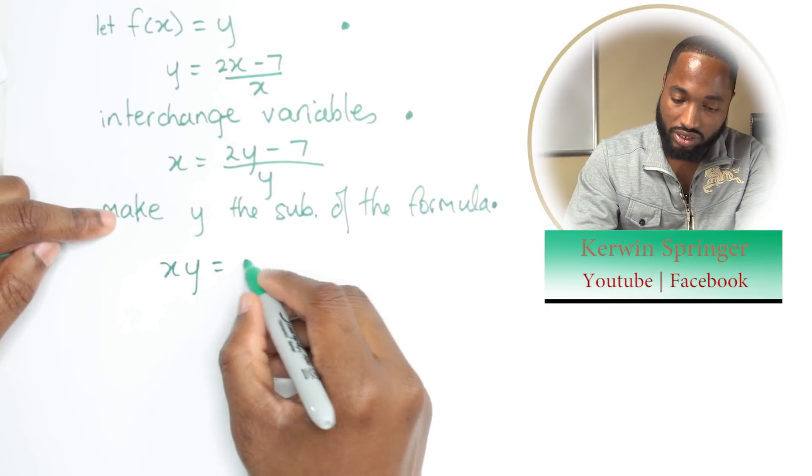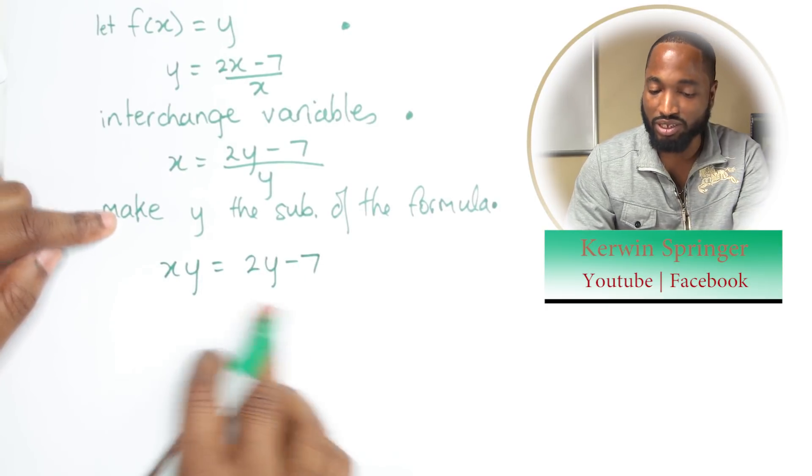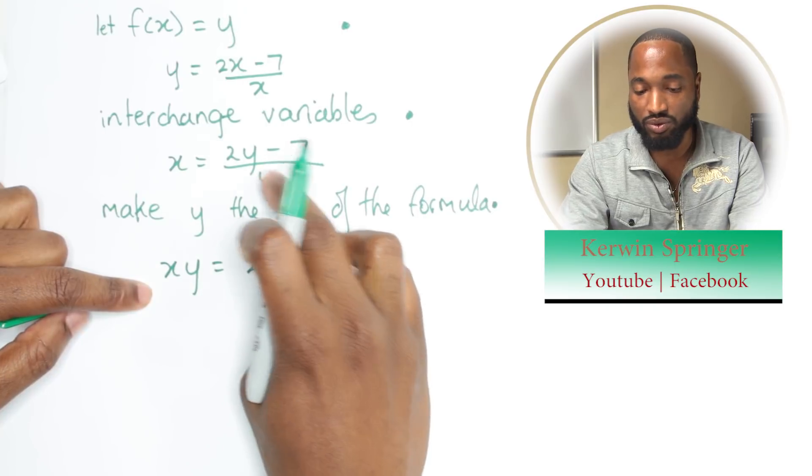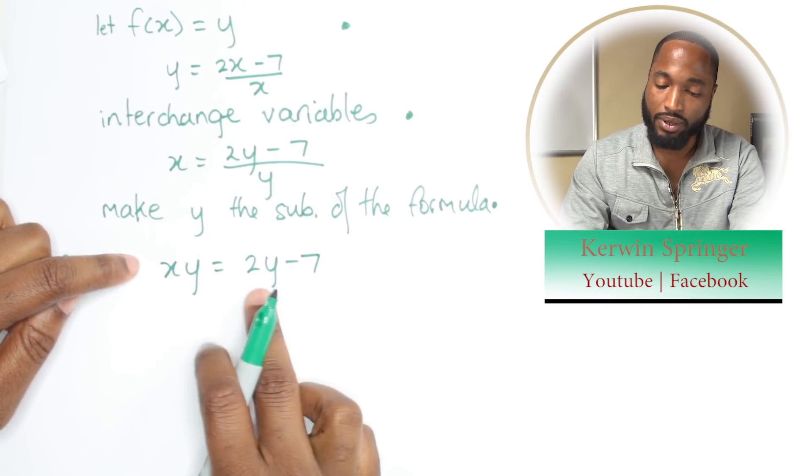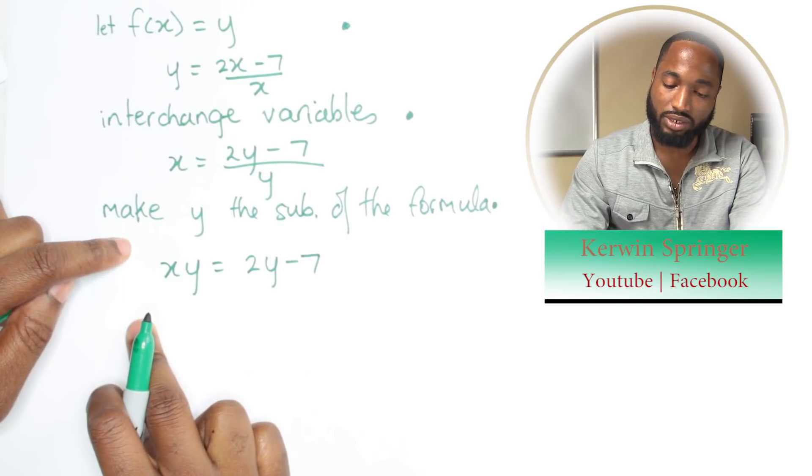xy is equal to 2y minus 7. This is multiplying both sides by y. This cancels and there will be a y there. Now let's bring this y across to meet his friend.